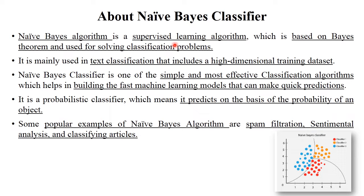The first point is about the Naive Bayes classifier. Naive Bayes algorithm is based on supervised learning. We discussed supervised, unsupervised, and reinforcement learning algorithms in our previous sessions. Naive Bayes is one type of supervised learning algorithm and it is completely based on Bayes theorem. This algorithm is generally used for solving classification problems — given a dataset with multiple features, you need to find out which class or object a data point belongs to. This algorithm is mainly used in text classification, object classification based on features, and datasets with high-dimensional training data.